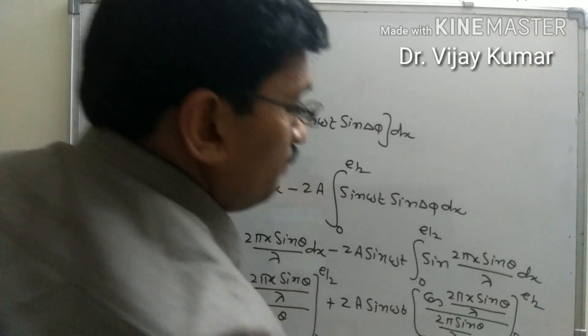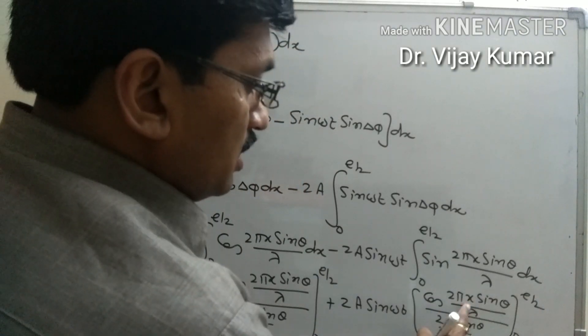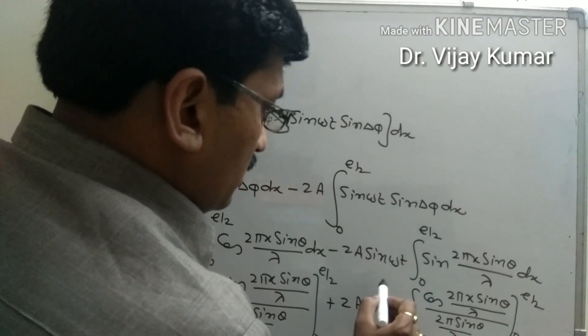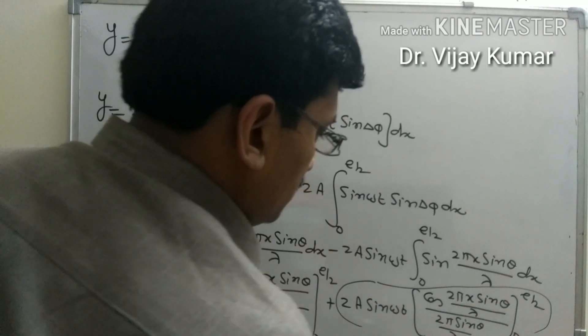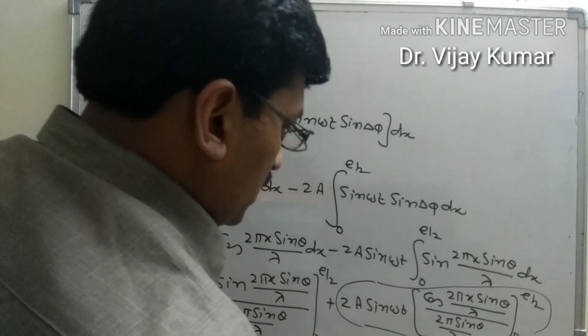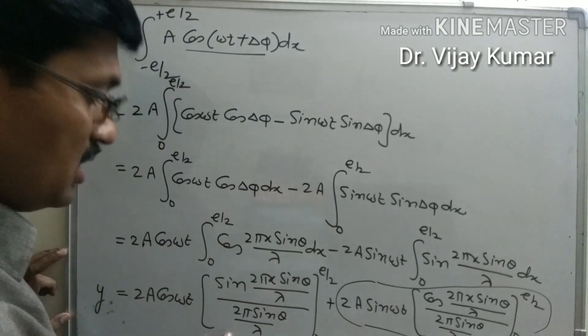When we put in the upper limit minus the lower limit, the value of these terms becomes equal to zero, which means only one term is remaining.